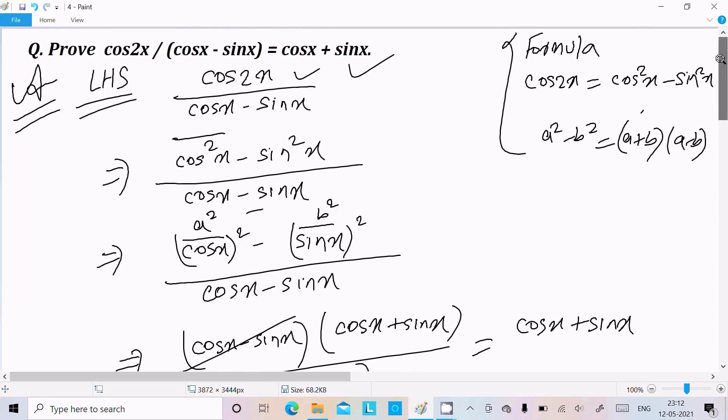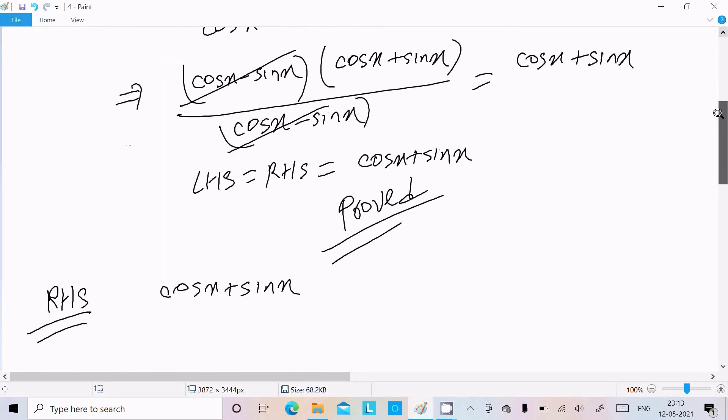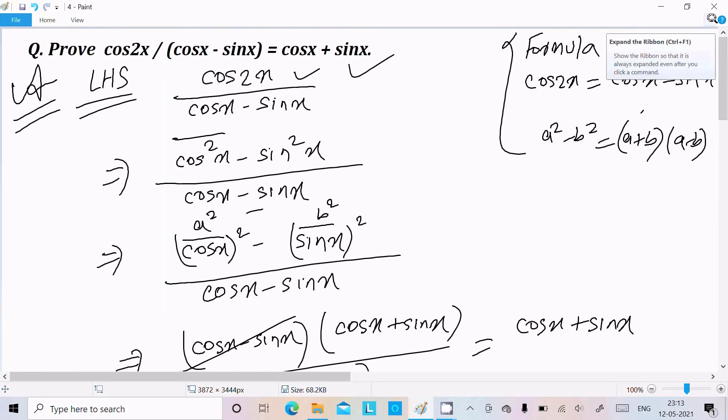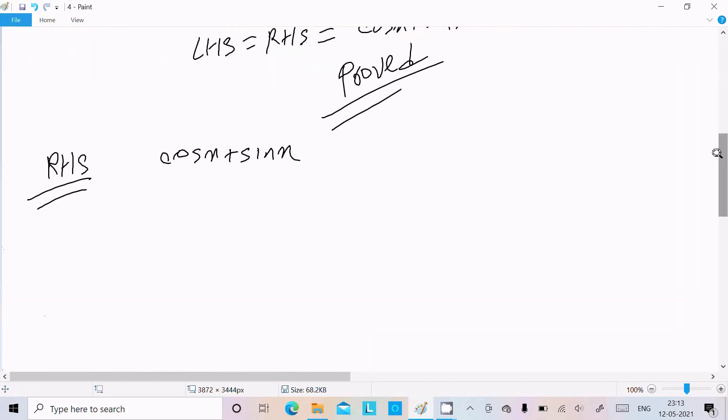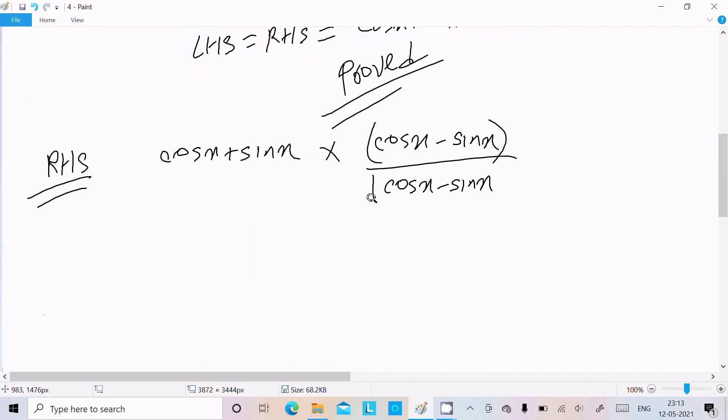So this is the first way we can prove. Now take the RHS. In RHS, cosx plus sinx is there. We need to make that cos2x on the numerator, so what we need to do? If I multiply here cosx minus sinx, cosx minus sinx in numerator and denominator, in denominator cosx minus sinx you get there.